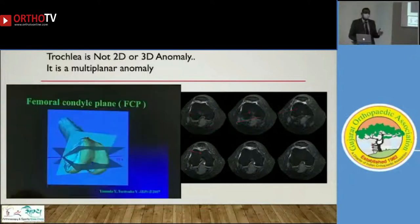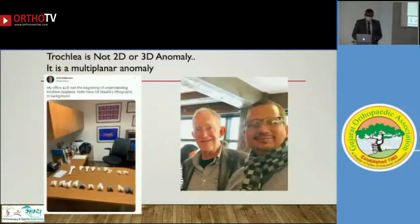The trochlea behaves differently at different levels. At zero degrees it might be type A; at 10 degrees, type B; at 20 degrees, type C — or something different. There is no one classification for a whole patient. This concept is difficult to understand, but we are trying to learn more about it.